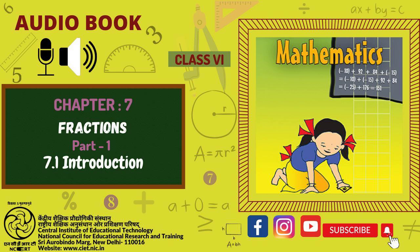Exercise 7.1 1. Write the fraction representing the shaded portion. 2. Color the part according to the given fraction. 1. 1 sixth 2. 1 fourth 3. 1 third 4. 3 fourth 5. 4 ninth